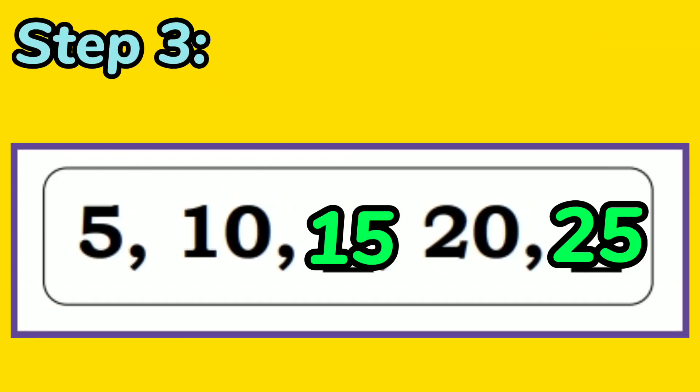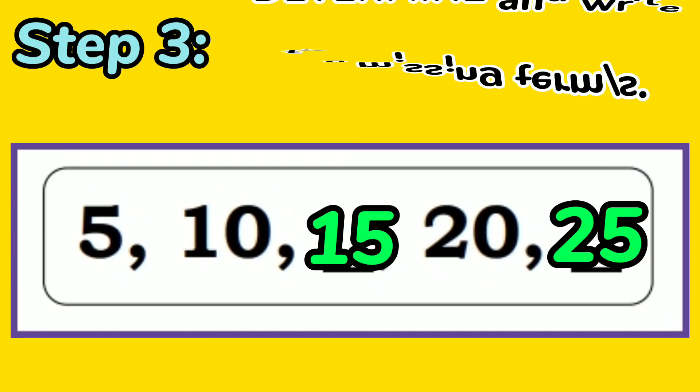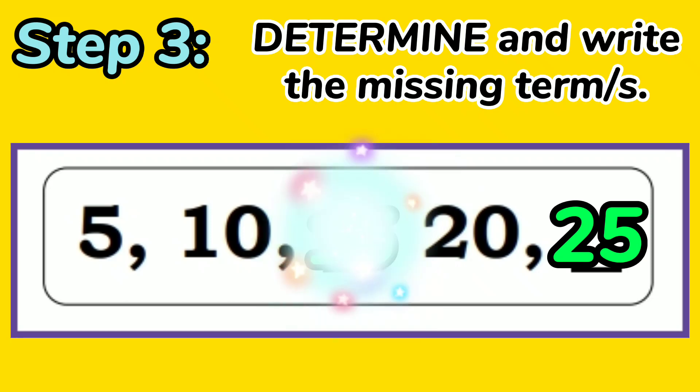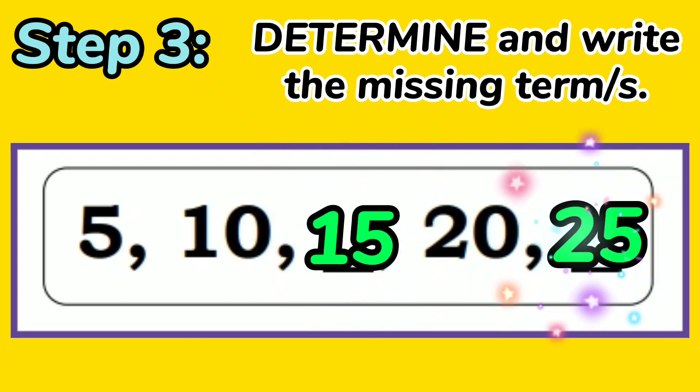And for the last step, you are going to determine and write the missing term or terms. After checking if the pattern is true up to the last term, you can now determine the missing terms. So the missing terms are 15 and 25.